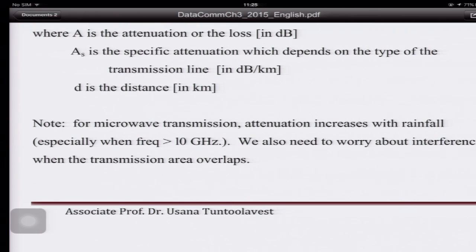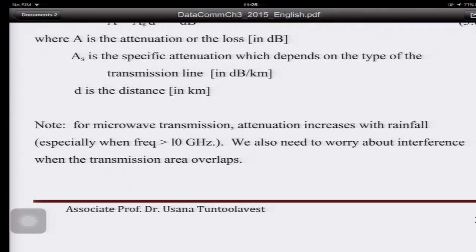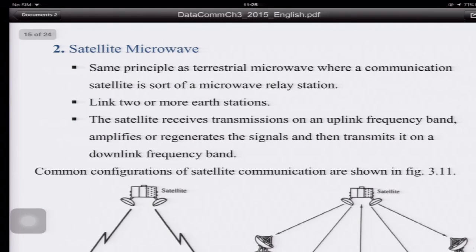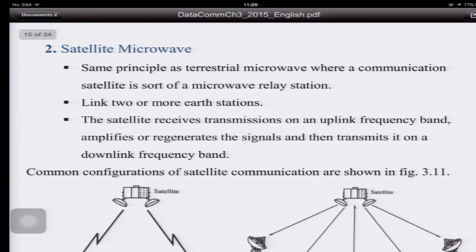For microwave transmission, attenuation increases with rainfall. If it's heavy rain, the signal may be lost. Frequencies above 10 GHz — typically used in satellite communication — are most affected, since the short wavelengths are attenuated by rain droplets. The second major microwave application is satellite microwave, which uses the same principle as terrestrial microwave but uses a satellite as a relay station or repeater, linking two or more Earth stations.